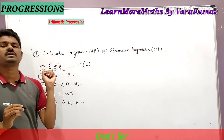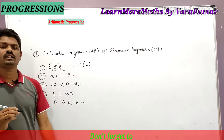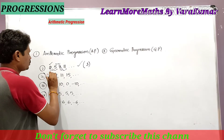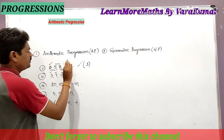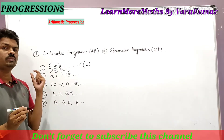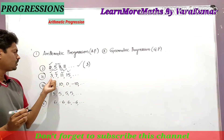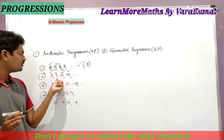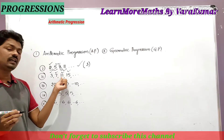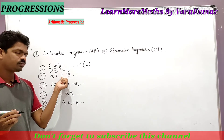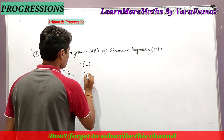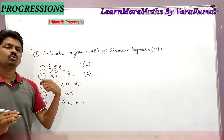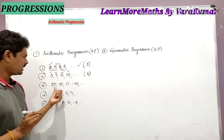Now taking the second list: 3, 7, 11, 15. Again observe the relation between successive numbers. If you add 4 to 3 you get 7; add 4 to 7 you get 11; add 4 to 11 you get 15. So here, by adding 4 to the preceding number we are getting the next number.